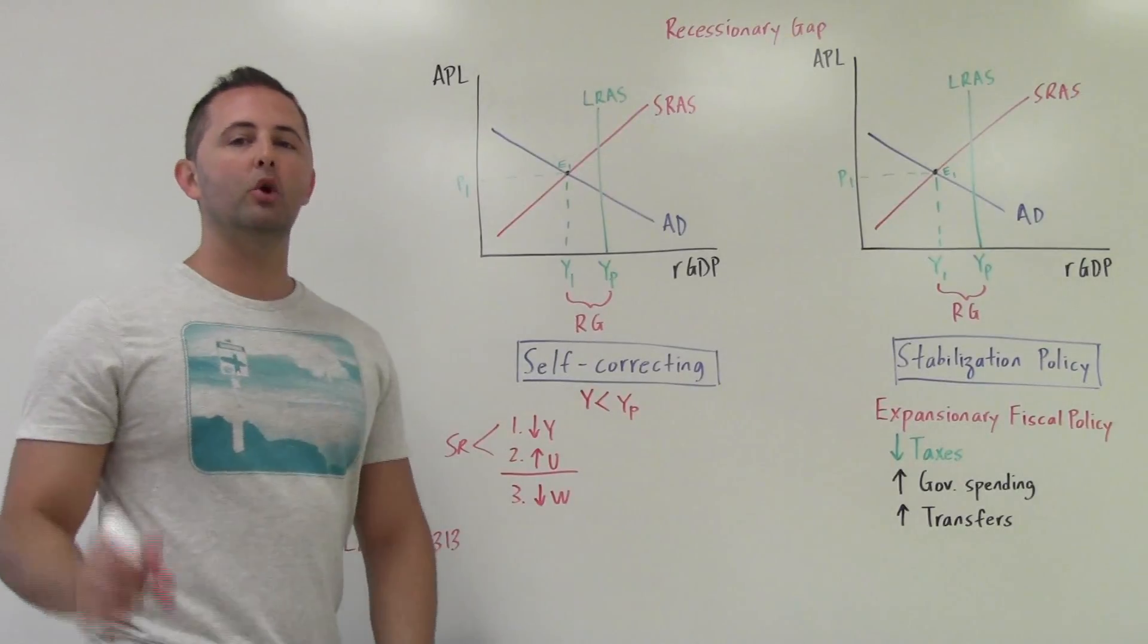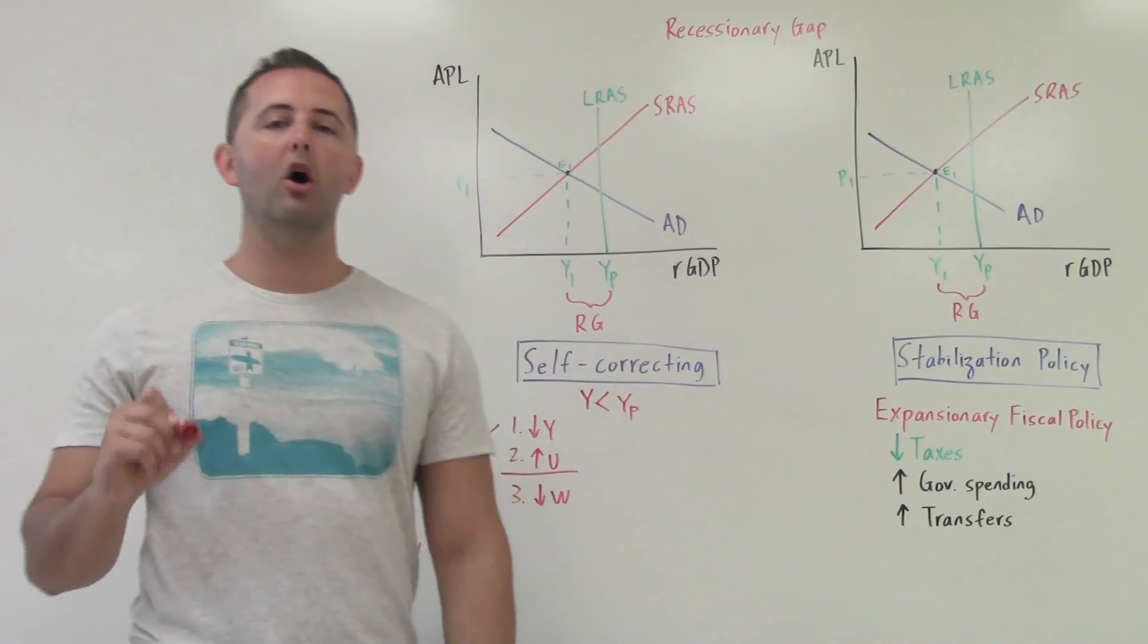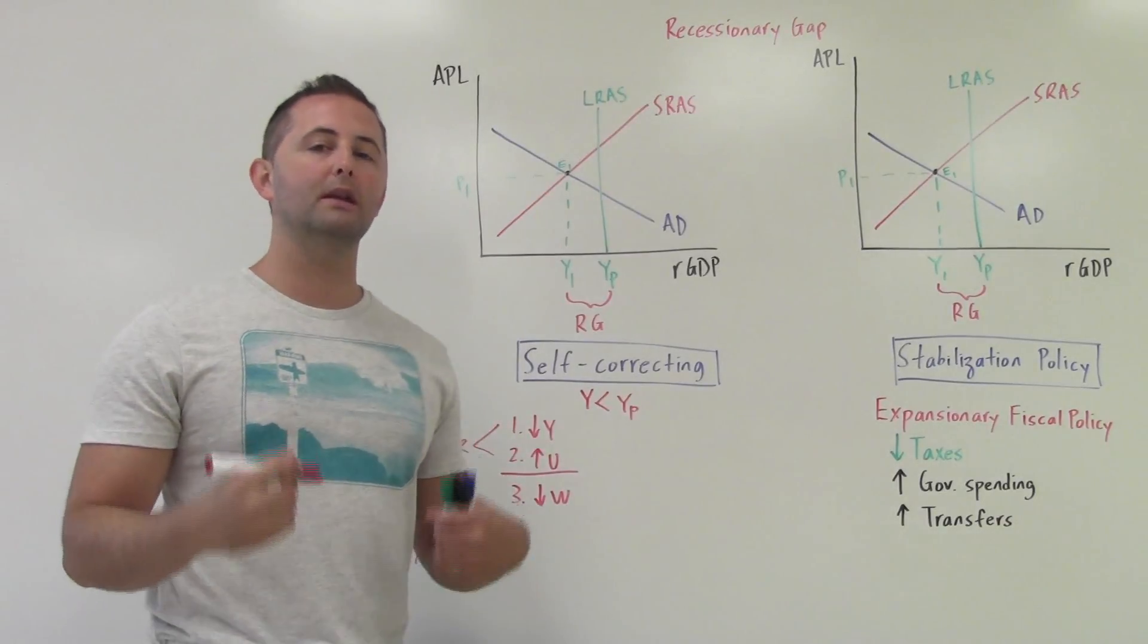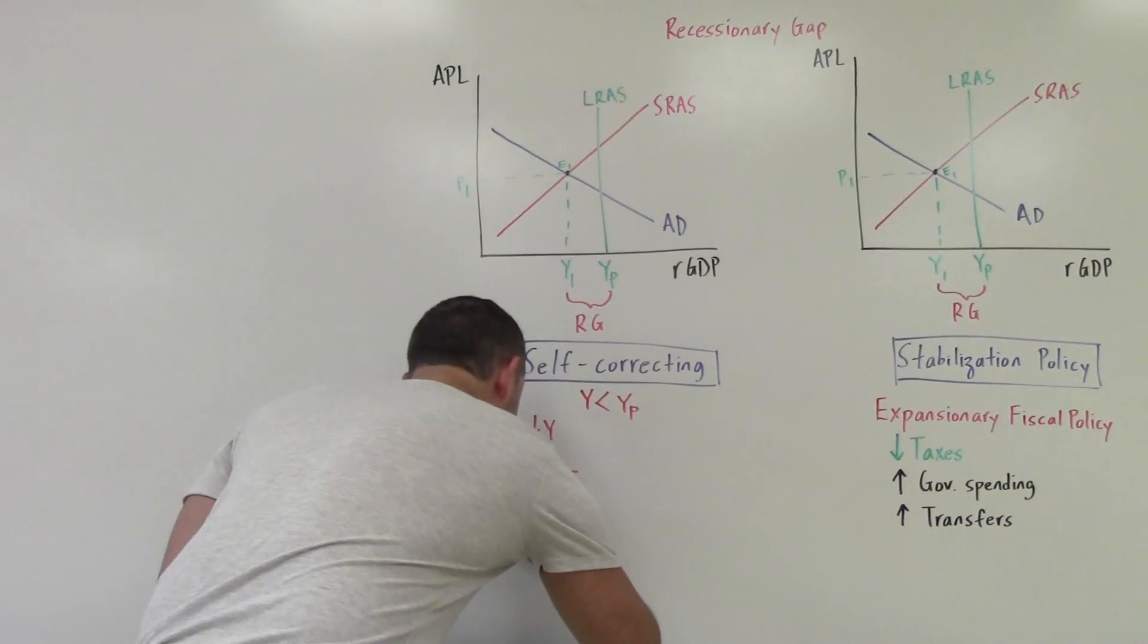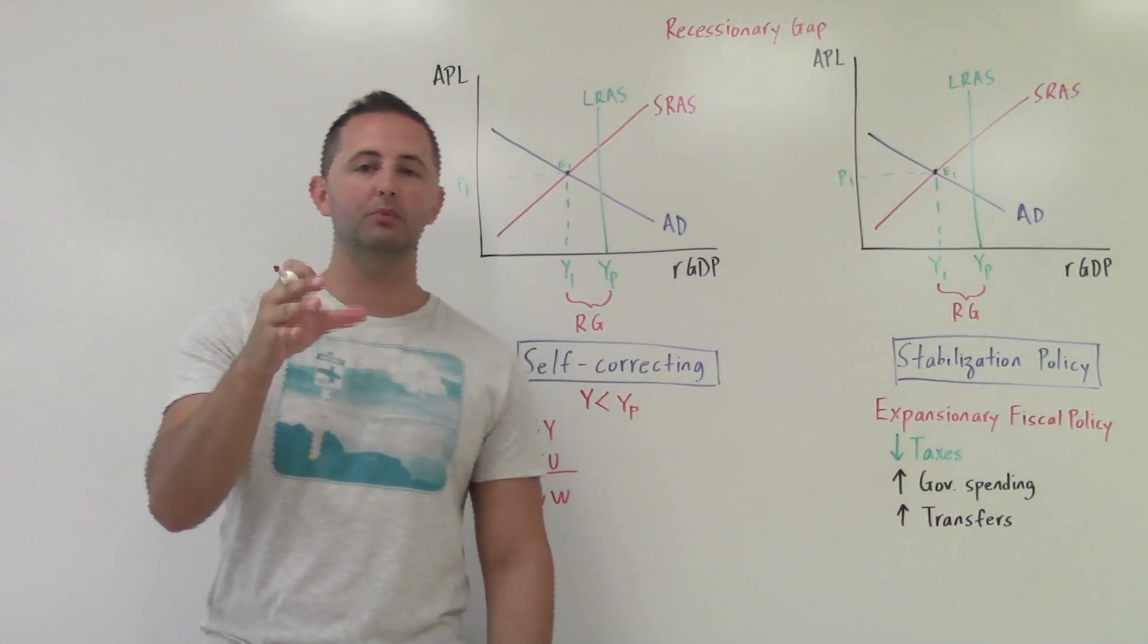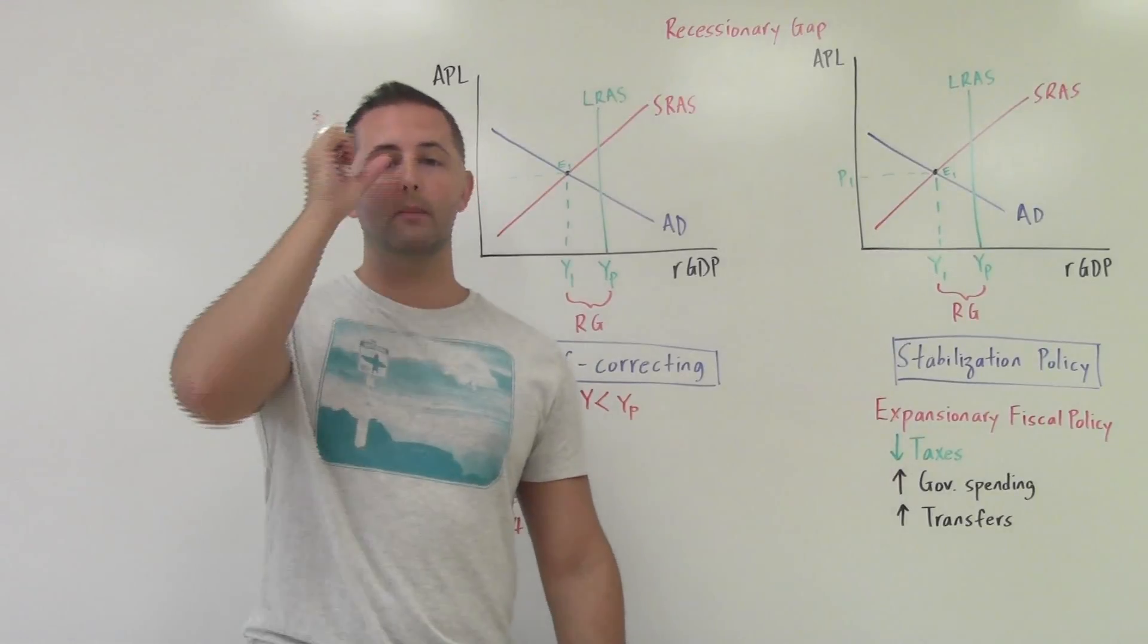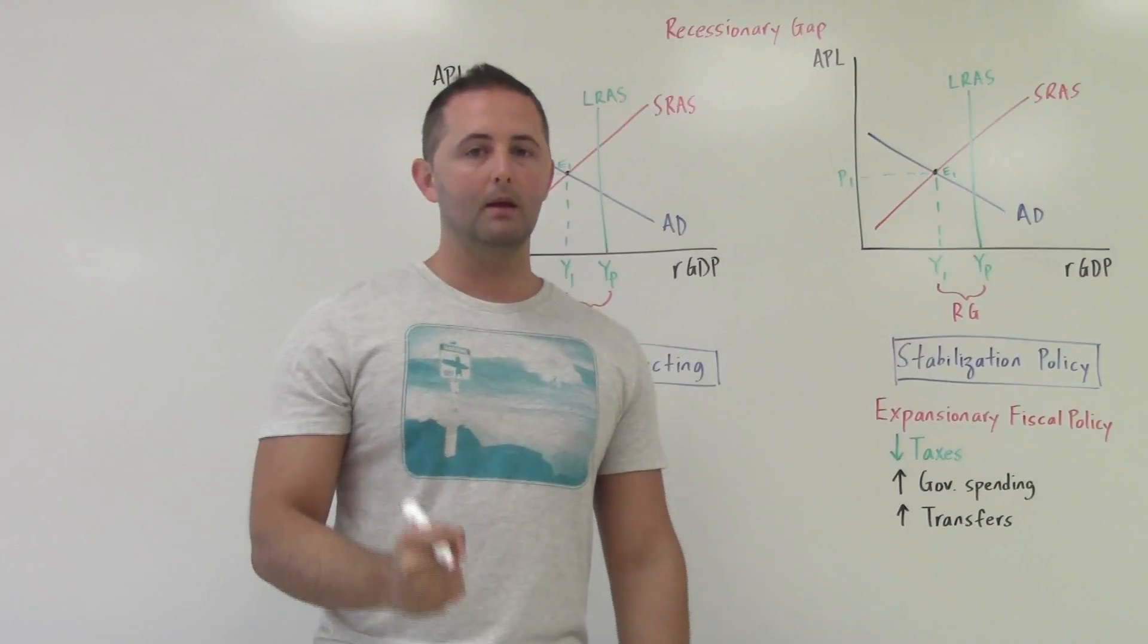If you think back to our negative and positive supply shocks, when we have falling wages, wages are a determinant not of aggregate demand, but of aggregate supply. So when we have falling wages, the question you need to ask yourself is, falling wages, cheaper workers, does that cause companies to be able to supply more or to supply less? Thinking about it logically or just remembering what that video told us,